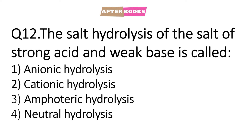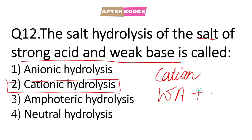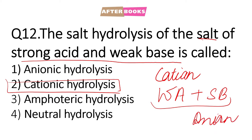Question number 12: The salt hydrolysis of the salt of strong acid and weak base is called — in that case, cation hydrolysis occurs and we call it cationic hydrolysis. And when we do salt hydrolysis of weak acid and strong base, anion hydrolysis occurs and we call it anionic hydrolysis. So the correct answer for question number 12 is option number 2.